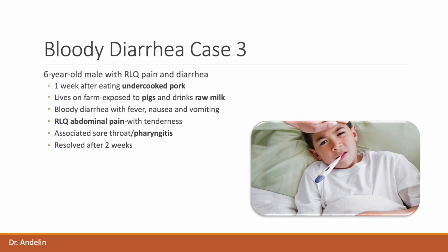Next, we have a six-year-old male with right lower quadrant abdominal pain and diarrhea. His symptoms began about one week after eating undercooked pork. He lives on a farm and has exposure to pigs as well as drinking raw milk. He has bloody diarrhea with fever, nausea, and vomiting. Specifically, he has right lower quadrant abdominal pain and tenderness, complains of sore throat with evidence of pharyngitis, and symptoms take about two weeks to resolve. This is consistent with Yersinia enterocolitica.